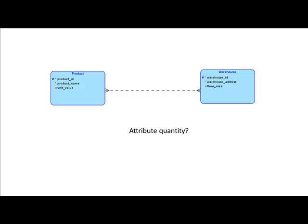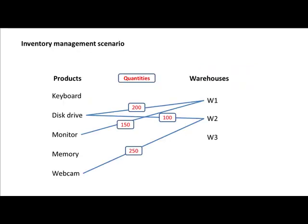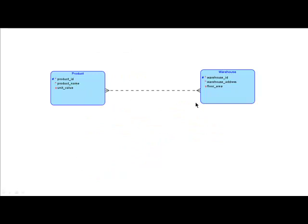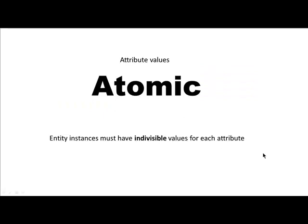Now there's a typical question: what do you do with the attribute 'quantity'? From the previous slide we saw that for every product-warehouse combination you have a quantity, but quantity doesn't seem to fit into either entity type. Before addressing that, there's one very important concept: all attribute values in a relational model must be atomic. Entity instances must have indivisible values for each attribute — you can't divide the value into further meaningful pieces, and an instance must have exactly one value for every attribute.